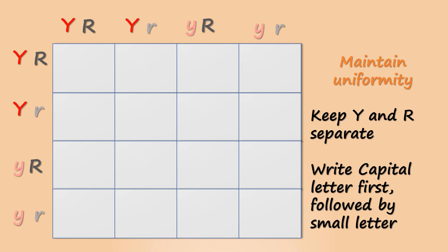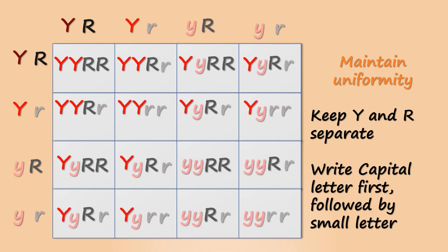So we will take capital Y from the column top and another capital Y from the row, capital R from the column top and capital R from the row. Similarly, in the next box, we will add capital Y, capital Y, capital R, small r based on the column top and the row. We will find all other gametes and complete the dihybrid cross.